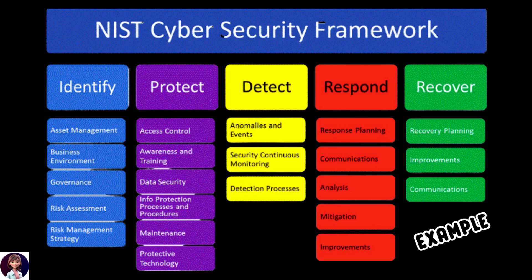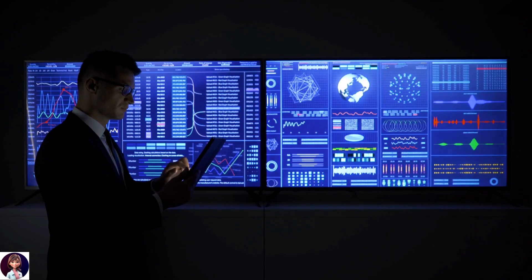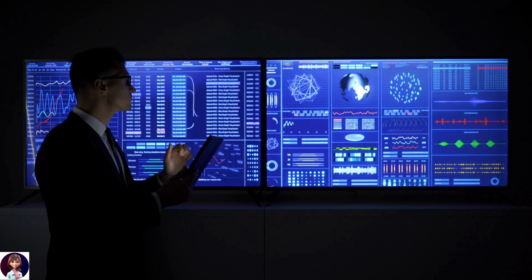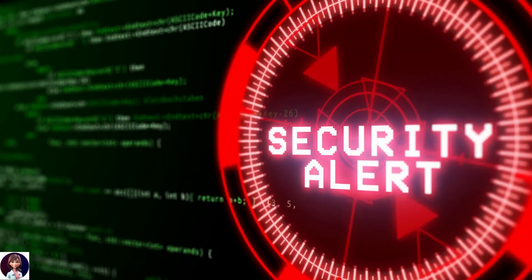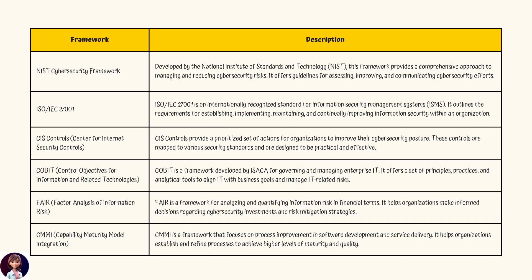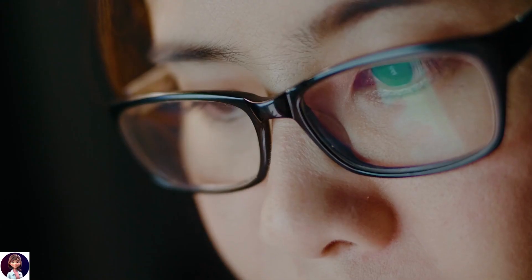Technology risk consultants often leverage various frameworks to assess and manage risks for their client projects. These frameworks provide structured guidelines, best practices, and methodologies to ensure that technology systems are secure, compliant, and resilient. Frameworks like the NIST Cybersecurity Framework emphasize risk assessment, management, and clear communication of cybersecurity efforts. Whereas a framework like COBIT is all about aligning IT with business goals and mastering IT-related risks. The more you can familiarize yourself with these frameworks, the more efficient you will be in providing advisory services to your clients.